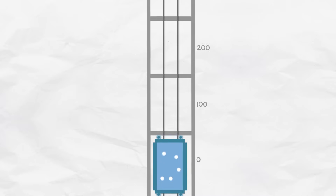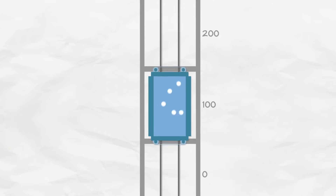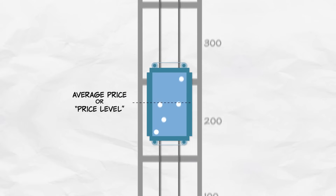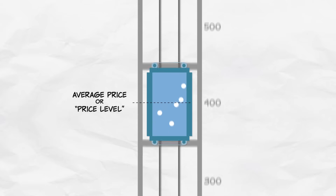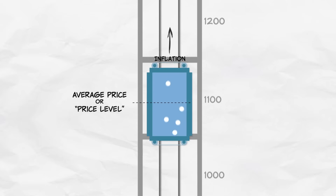Shifts in supply and demand are pushing some prices up and other prices down all the time. Let's think about each of these prices like ping-pong balls — ping-pong balls in an elevator. Inflation is when the average price is going up. Inflation is when the elevator is going up.